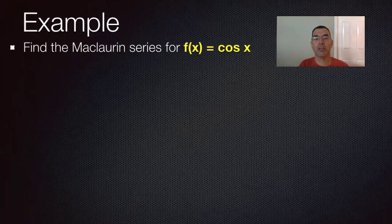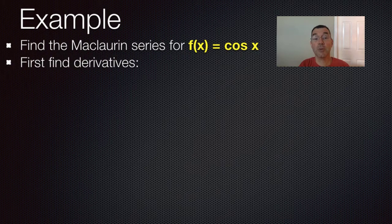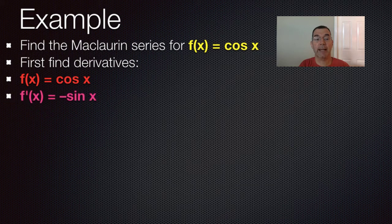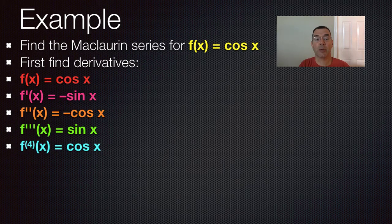Let's do a couple of examples. The first one is the cosine of x — we're going to write a polynomial that will approximate the cosine function. First we'll find some derivatives. The function itself is cosine x, and the first derivative is negative sine x. The next derivative is negative cosine x. The derivative of that is sine x, and the fourth derivative gets us back to cosine x. The cosine function cycles through those four functions with its derivatives.